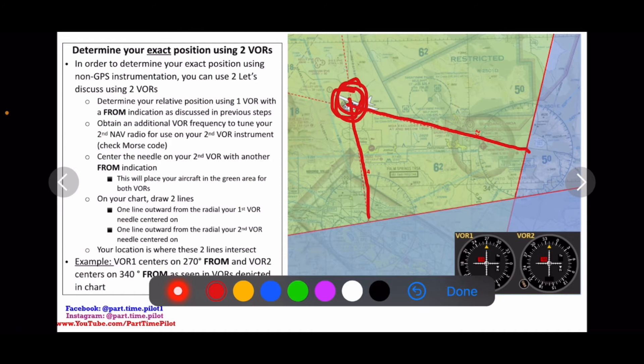And what we'll find here is it's going to center with a from indication on three four zero, because that's where our aircraft is located. So that's the signal from the VOR that we're going to receive on the three four zero radial. And again, we're on the from side. So that's the green side here for that VOR.